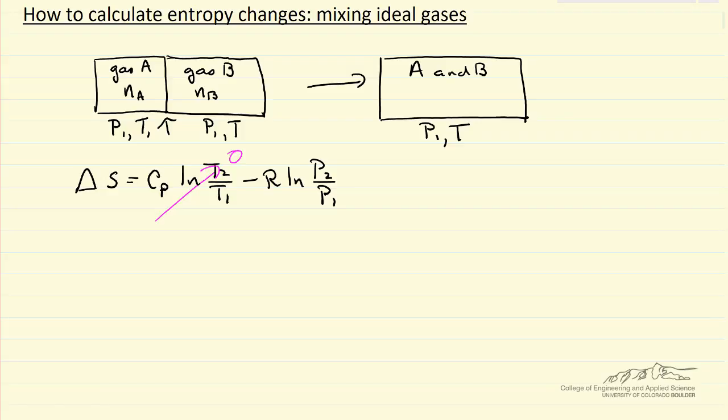So let's look at the entropy change of A. Delta S is per mole, so minus R log, so our initial pressure of P1, our final pressure is the mole fraction of A times P1, the final partial pressure, so that the entropy change for A is just minus R log the mole fraction of A.